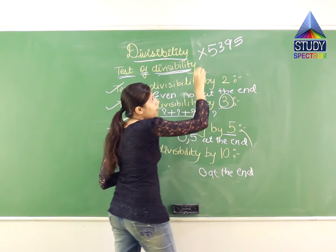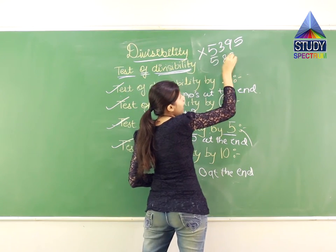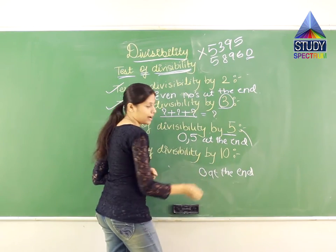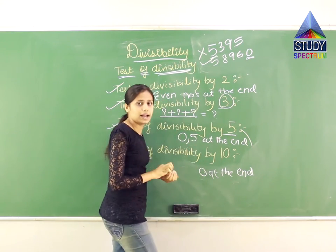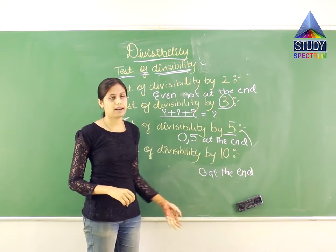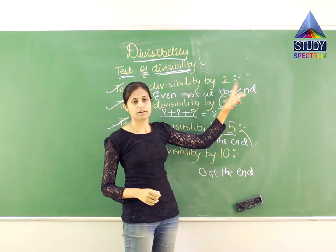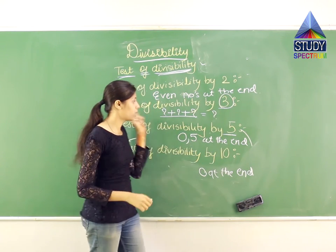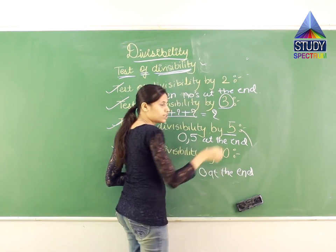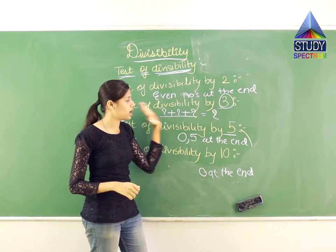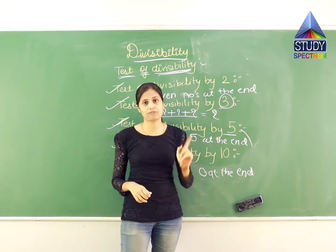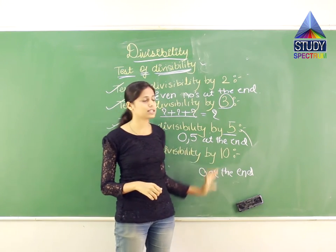For example, the number 5,8,9,6,0 — the last digit is 0, so this number is divisible by 10. So here is the simple summary: for divisibility by 2, look for an even number at the end. For divisibility by 3, take the summation of all digits — if that sum is divisible by 3, the whole number is. For divisibility by 5, check that the last digit is 0 or 5. For divisibility by 10, check that the last digit is 0.